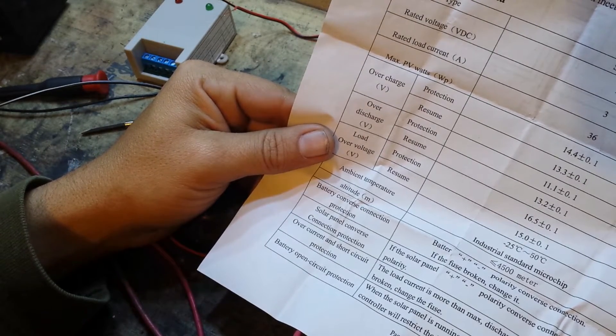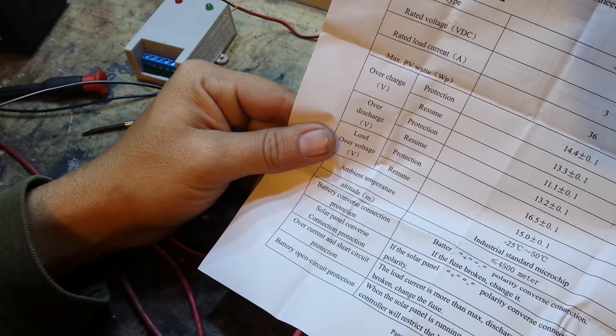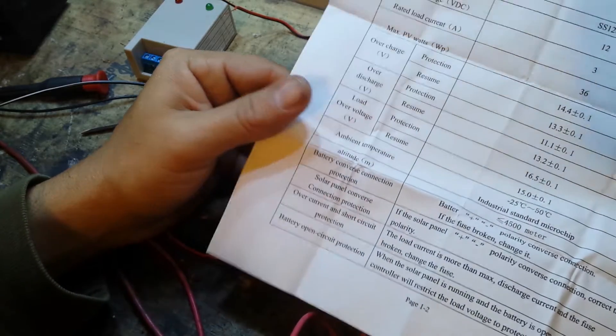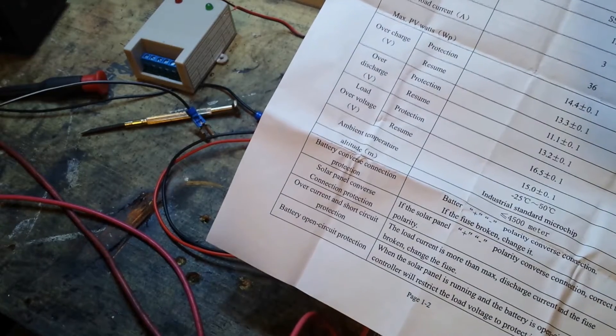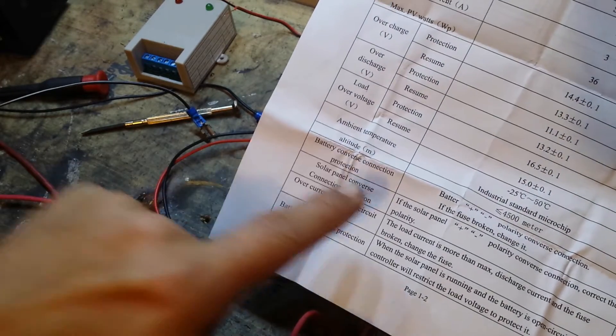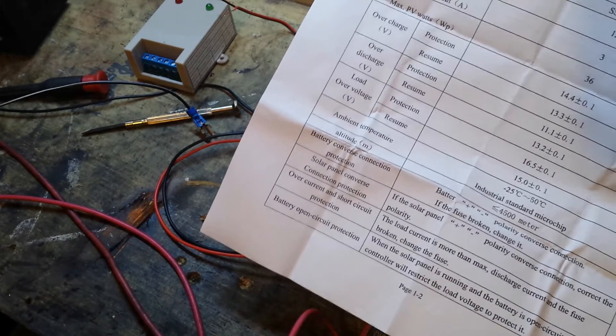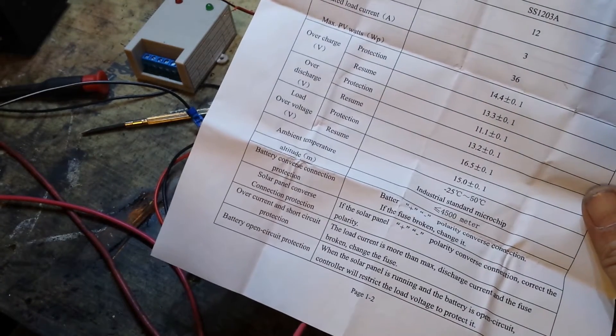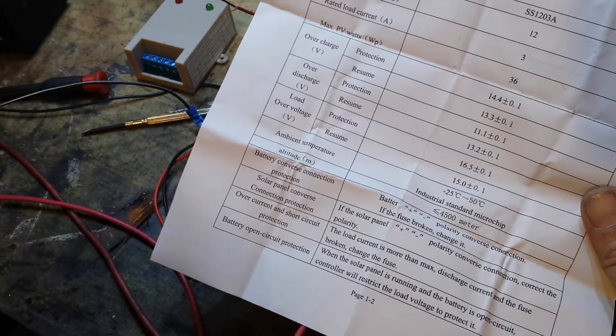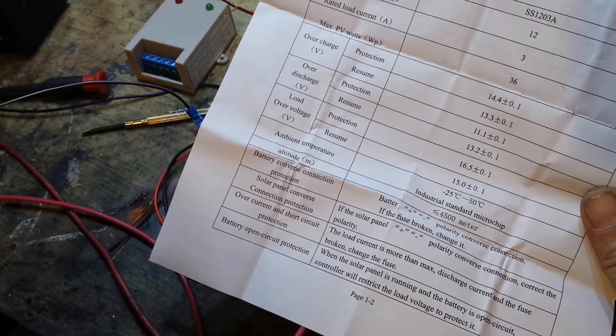It'll charge it all the way up to 14.4 volts and then shut off to protect the battery from overcharging. It also has discharge protection, so if it gets below 11.1 volts it will shut the controller off and won't allow power back into the feed. It'll shut itself off if we run it all the way up to 16 volts.